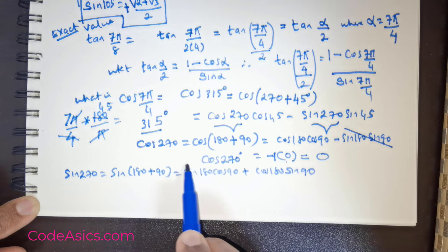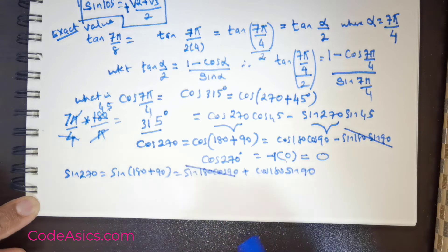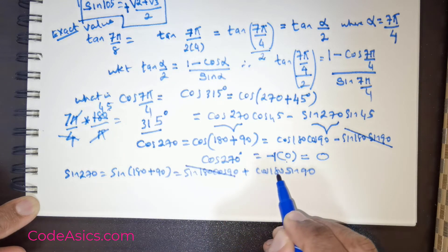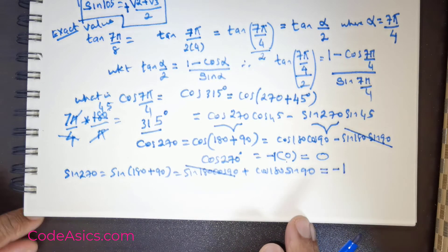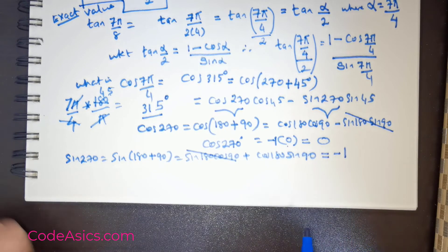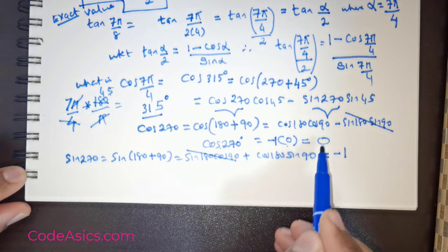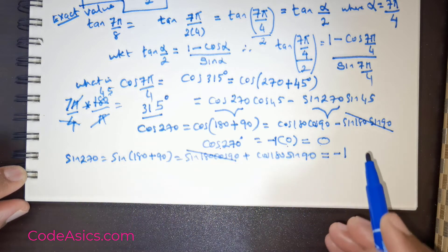Now cos 90 gets cancelled. Sin 90 is 1. Cos 180 is negative 1. So the outcome is going to be negative 1. So cos 270 is 0, sin 270 is negative 1.